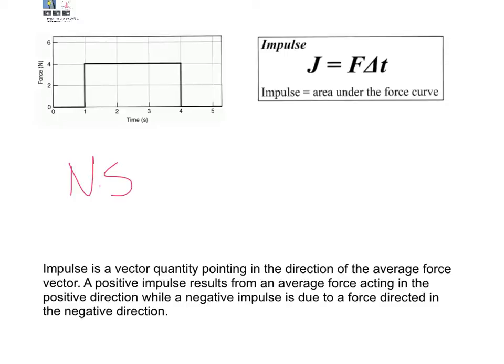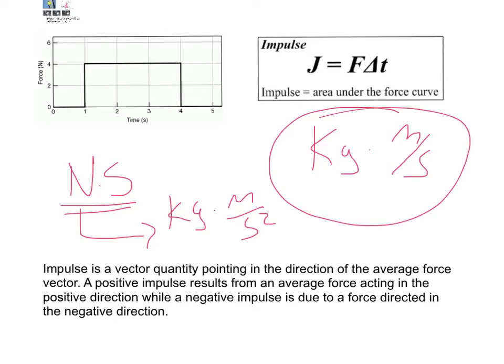But, since a Newton itself is a compound unit called a kilogram meter per second squared, we can show that this unit of Newton-seconds can be simplified to kilogram meters per second. So, that's the units we use for impulse, kilogram meters per second.